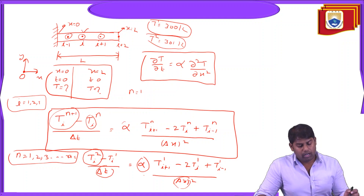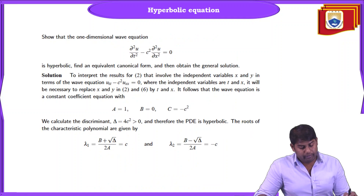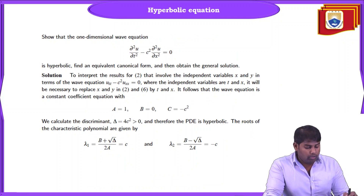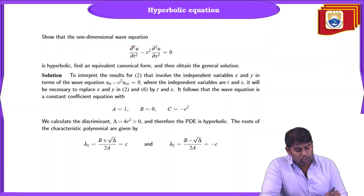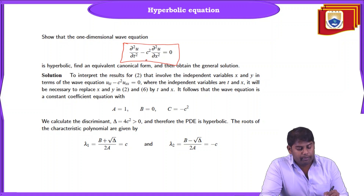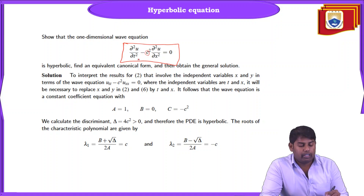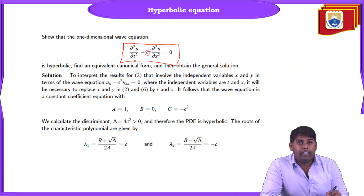For the hyperbolic case, consider the 1D wave equation: ∂²u/∂t² − c² ∂²u/∂x² = 0. Here the wave speed c, Δx, and Δt are the parameters that govern the stability aspect for numerical schemes.